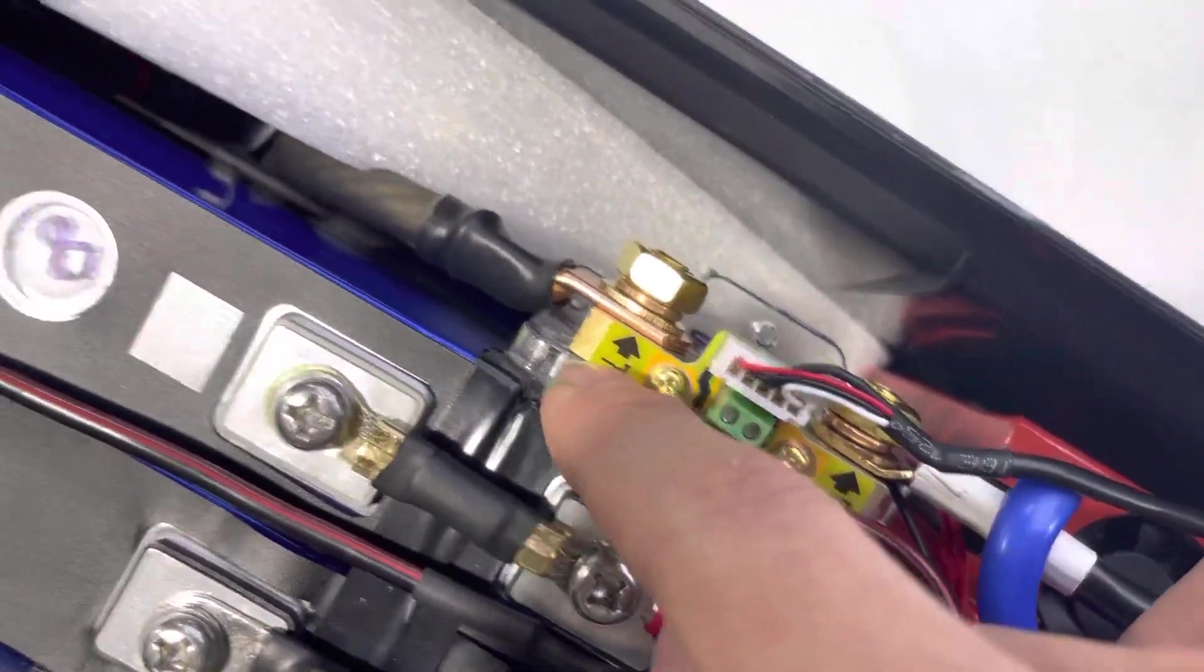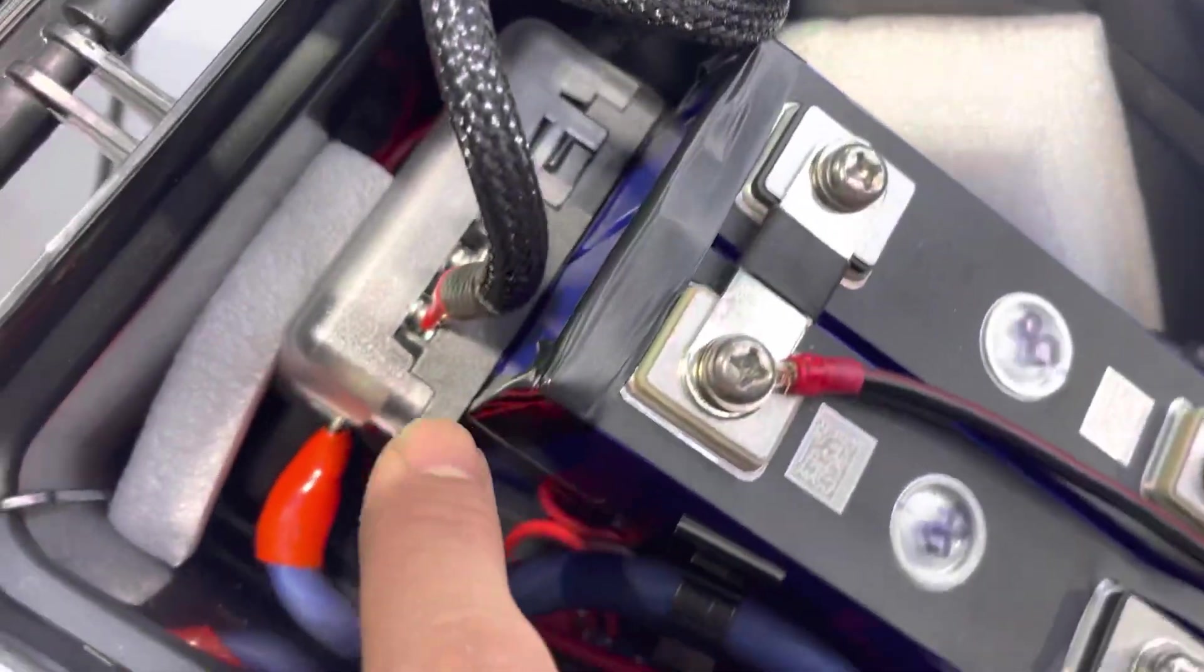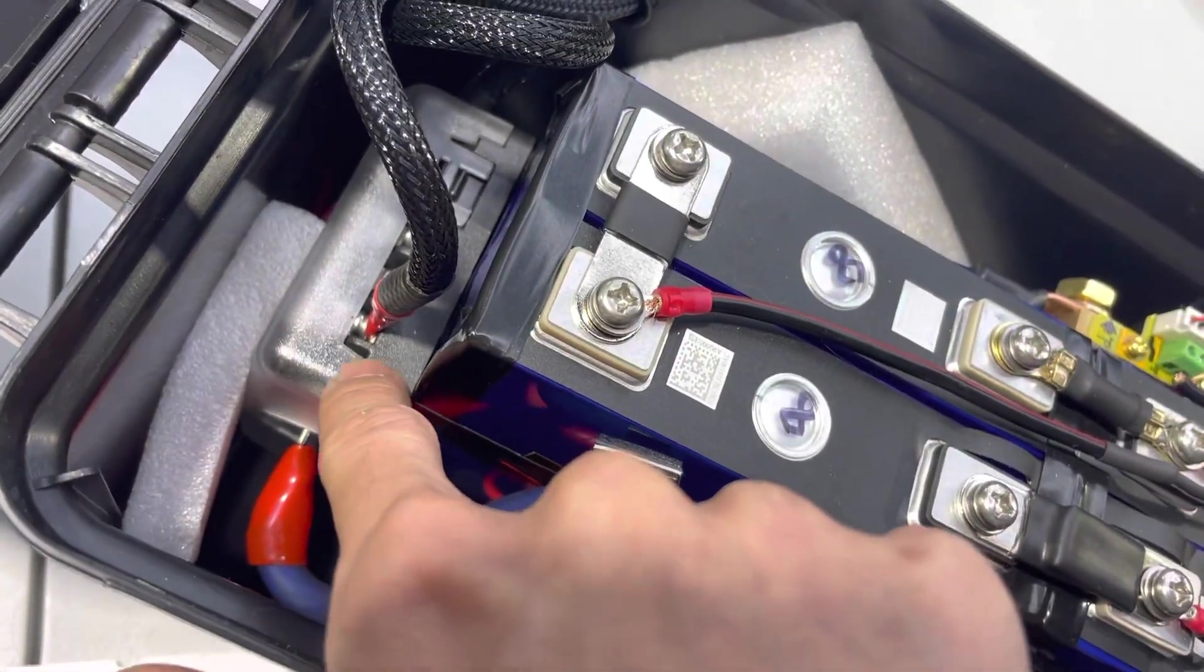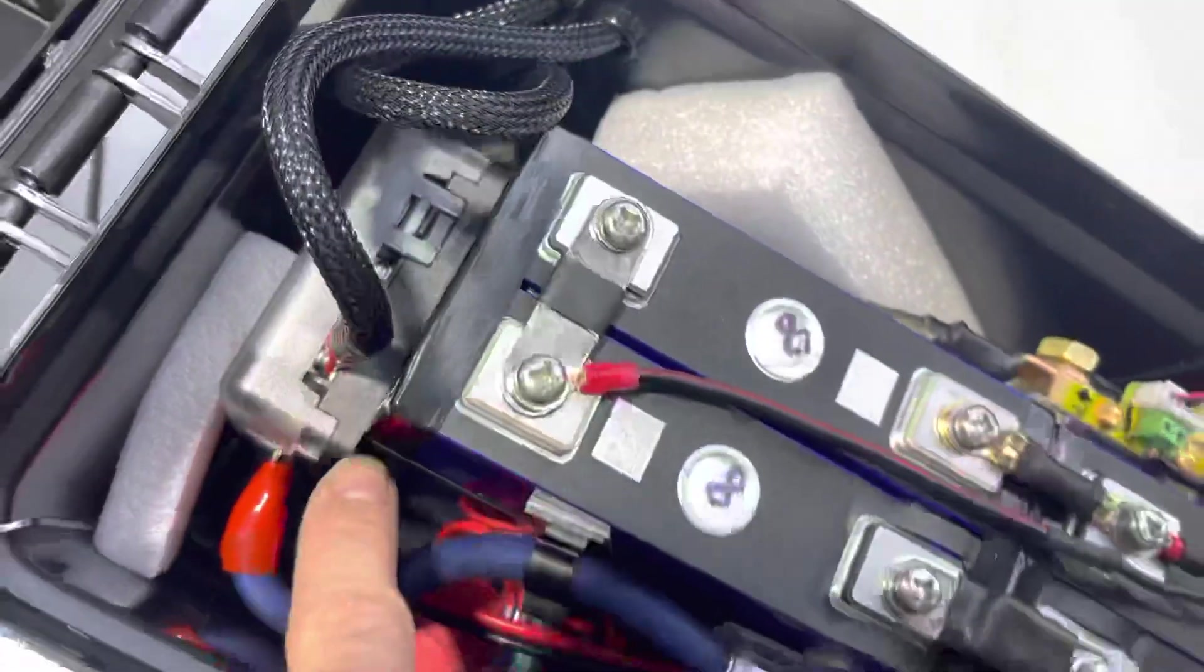The P- goes to the B- of the shunt and then the P- goes to my ground distribution block. This is actually my fuse block, so that's positive and ground distribution on here.